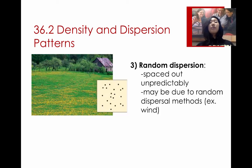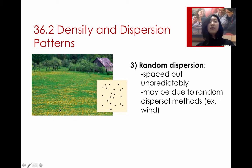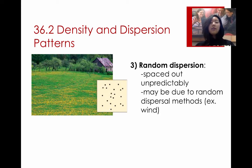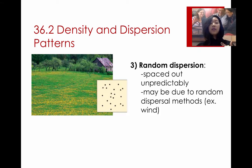The last one is random dispersion, which is when you just see random scattering. This picture here is supposed to be dandelions — those little yellow weed flowers you see outside. The reason why they're so randomly dispersed is often because their seed dispersal method is very random, depending on wind or tracking with animals or something like that.